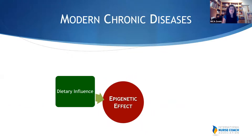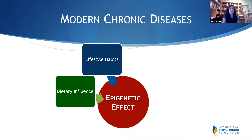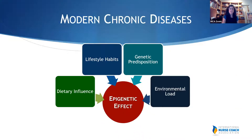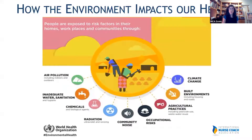Modern chronic diseases have a nutritional component, a lifestyle component, a genetic component, and an environmental component — and together these alter our genetic expression. How the environment impacts our health involves looking at communities and risk factors, whether it be farm workers exposed to pesticides, children in urban environments, or other risk factors like noise and climate change.